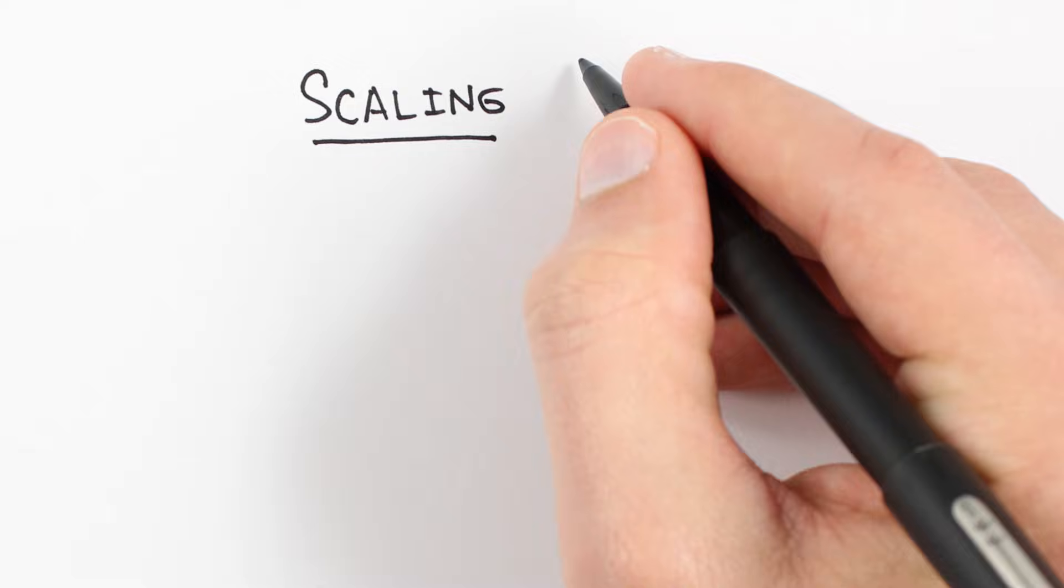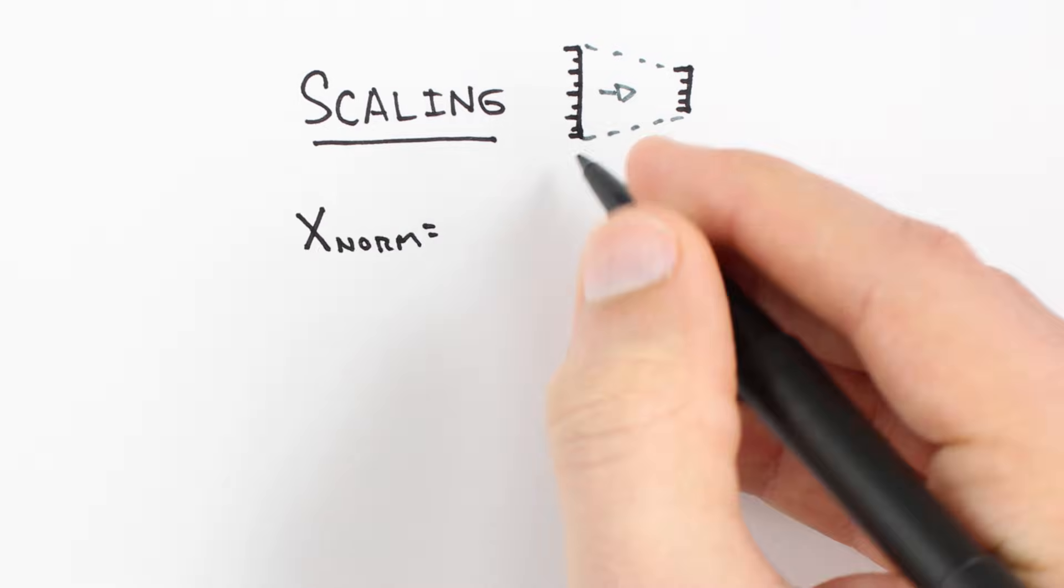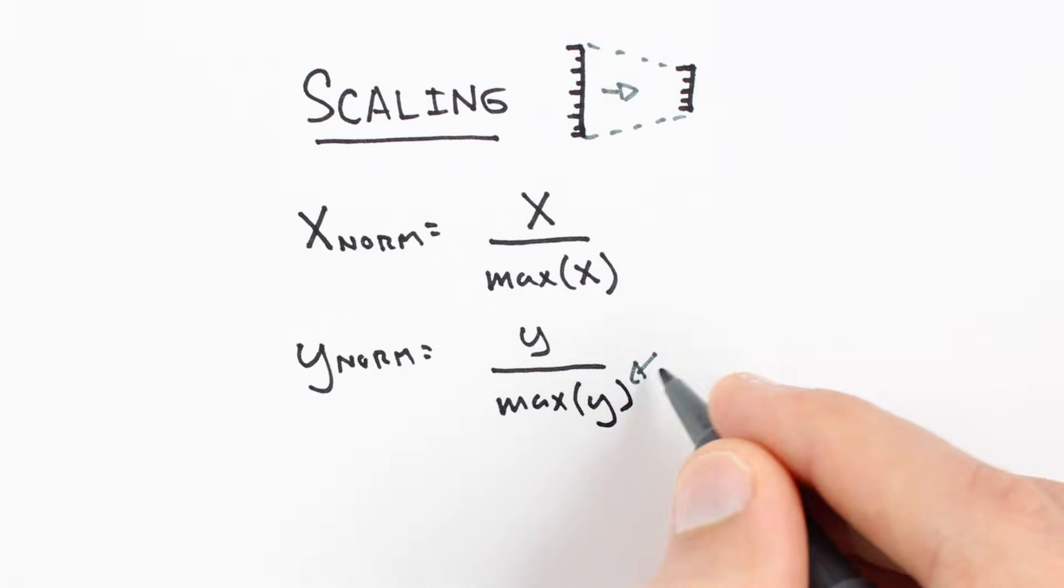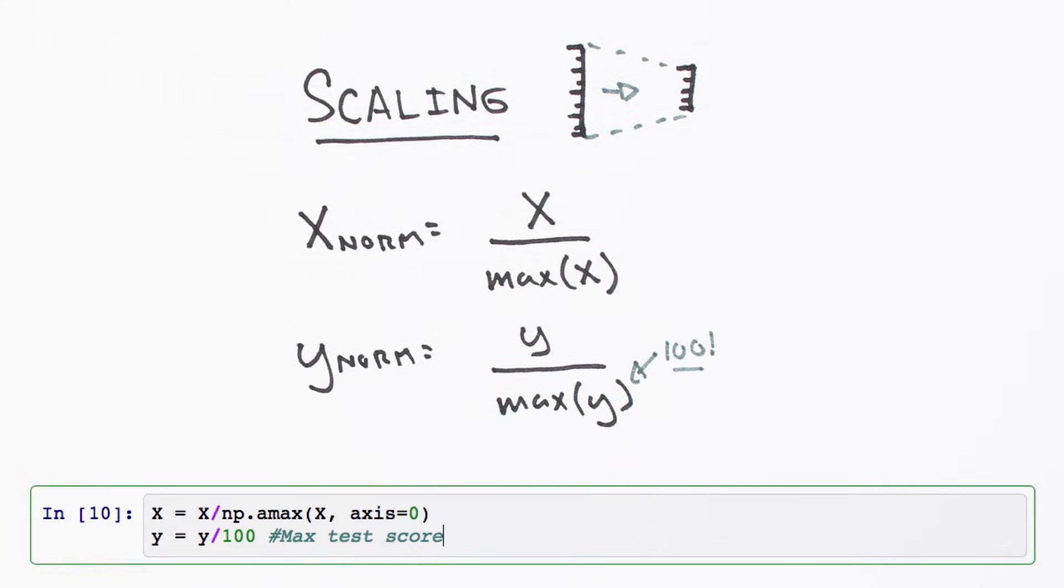The solution is to scale our data. This way our model only sees standardized units. Here, we're going to take advantage of the fact that all our data is positive and simply divide by the maximum value for each variable, effectively scaling our result between 0 and 1.